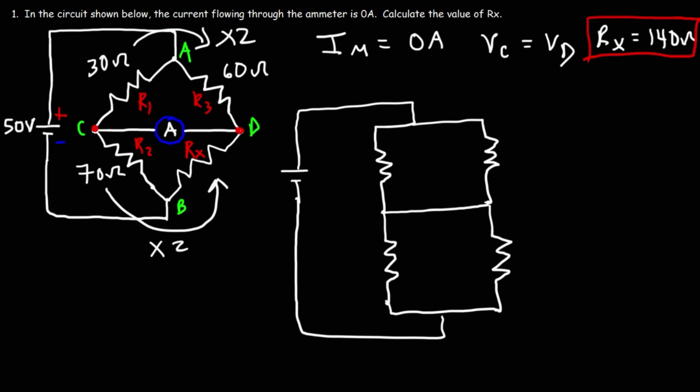So this is R1, R3, R2, and Rx. Now let's say that the current flowing through R1 is, let's call it Ia. Now there's no current flowing in this branch. So therefore, Ia also flows through R2. And the current flowing through R3, let's call it Ib. So that's going to be the same current flowing through Rx.